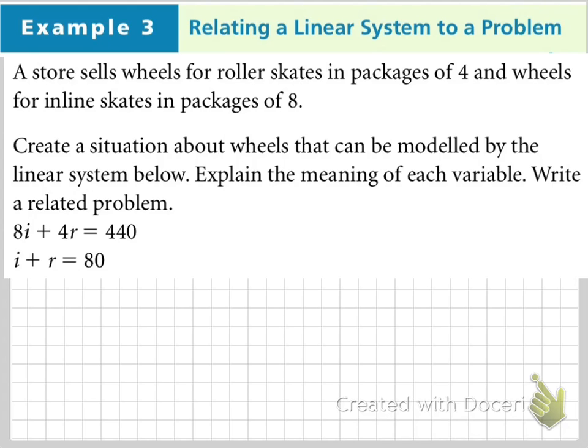Well, what can we say? 8i plus 4r equals 440. Well, we know that there's 8 inline skate wheels in a box, and there's 4 roller skate wheels in a box, so we could say the first equation, i, is a package of inline skates, and r is a package of roller skates.